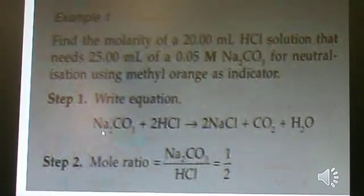The equation is Na2CO3 plus 2 HCl gives 2 NaCl plus CO2 plus H2O.